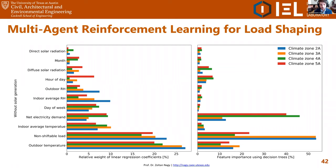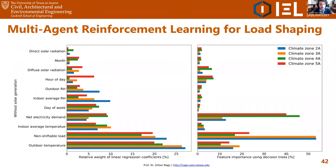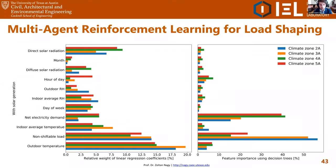In reinforcement learning, we first need to pick what states to use — variables that tell the controller what actions will work best. These states must be good predictors of the reward function, which in this case are functions of the net electricity consumption of buildings. We fitted different linear regression models and decision trees, and by looking at the coefficients we identified what states were better predictors of electricity consumption. We then used these states as inputs to our RL agents to help them take the right actions and flatten the curve of electricity demand.